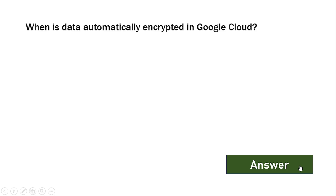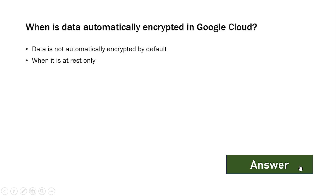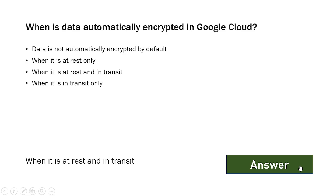When is data automatically encrypted in Google Cloud? The options are: data is not automatically encrypted by default; when it is at rest only; when it is at rest and in transit; when it is in transit only. The answer is: when it is at rest and in transit.